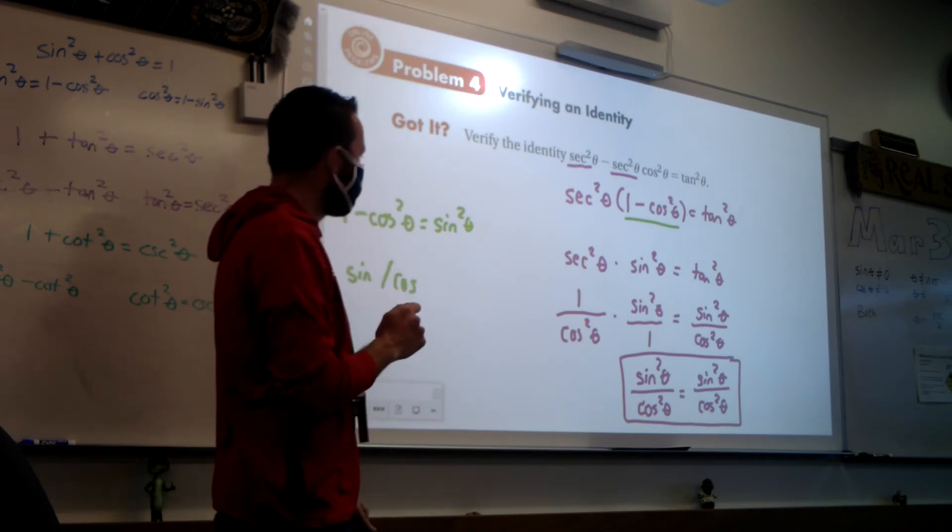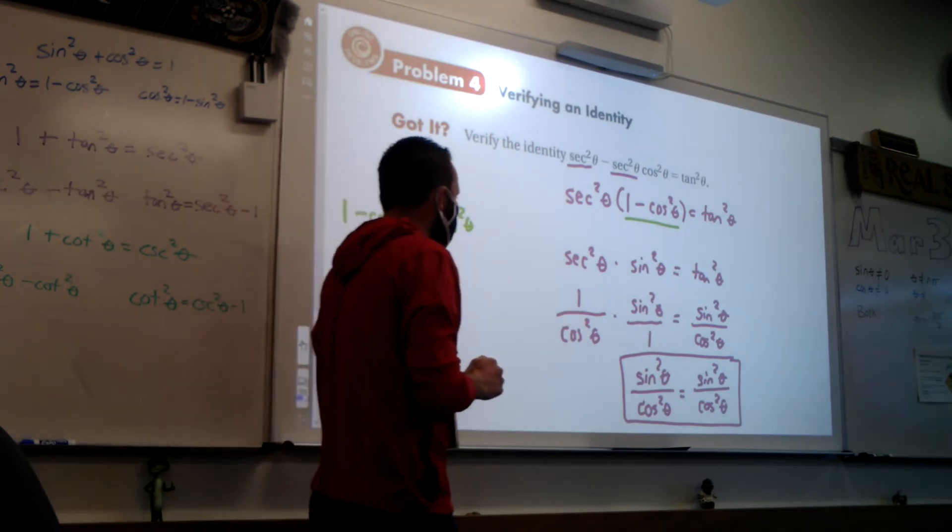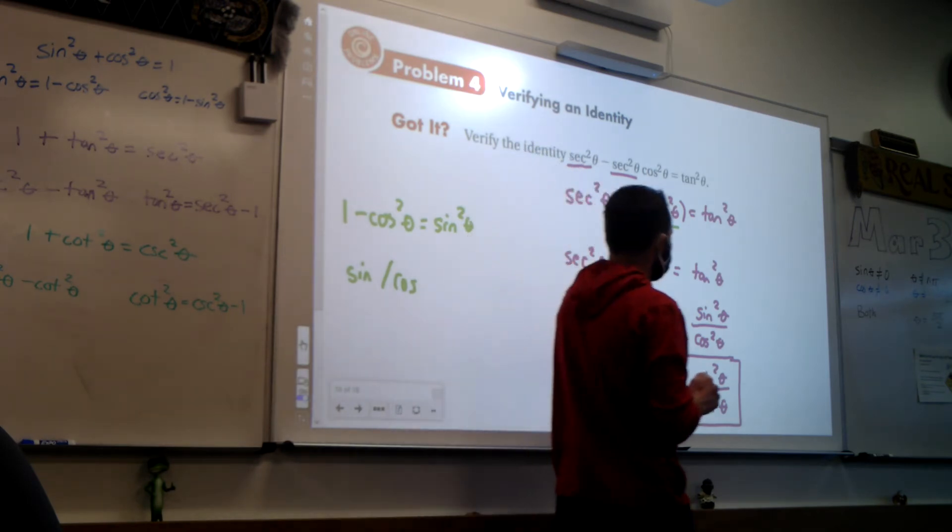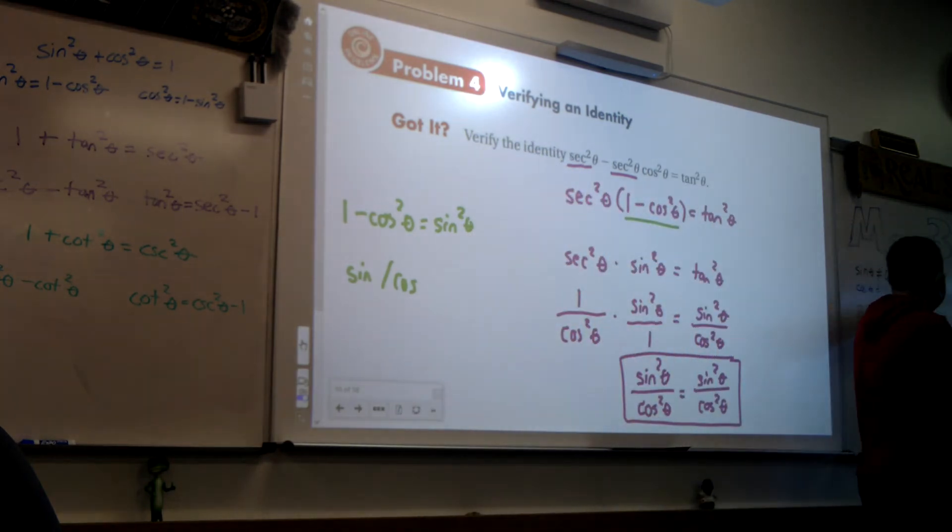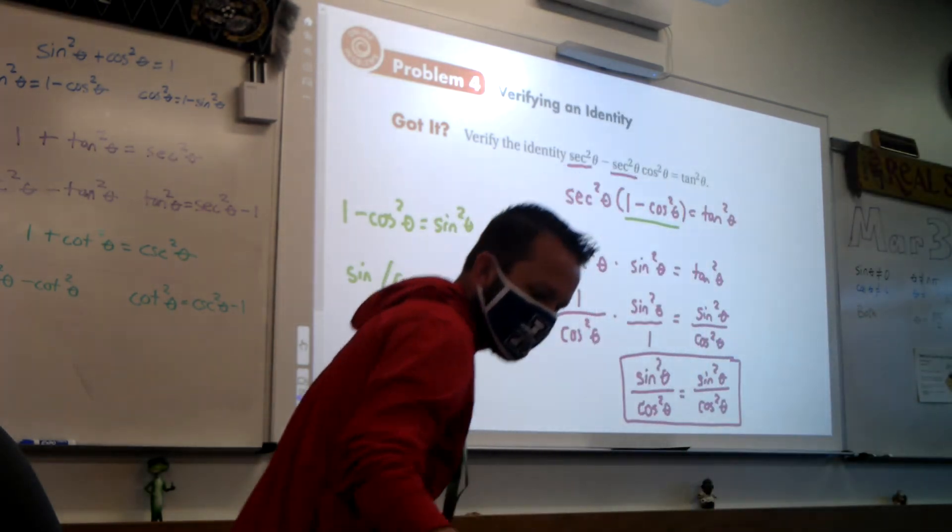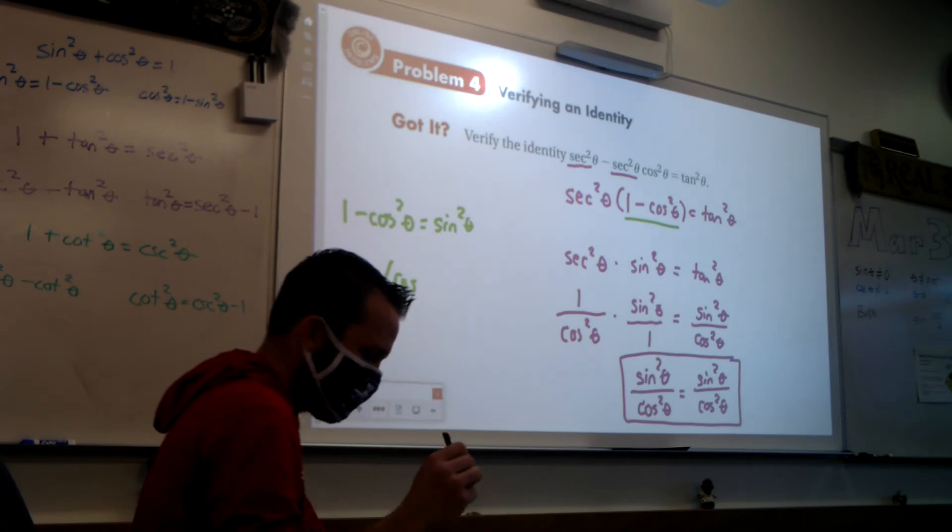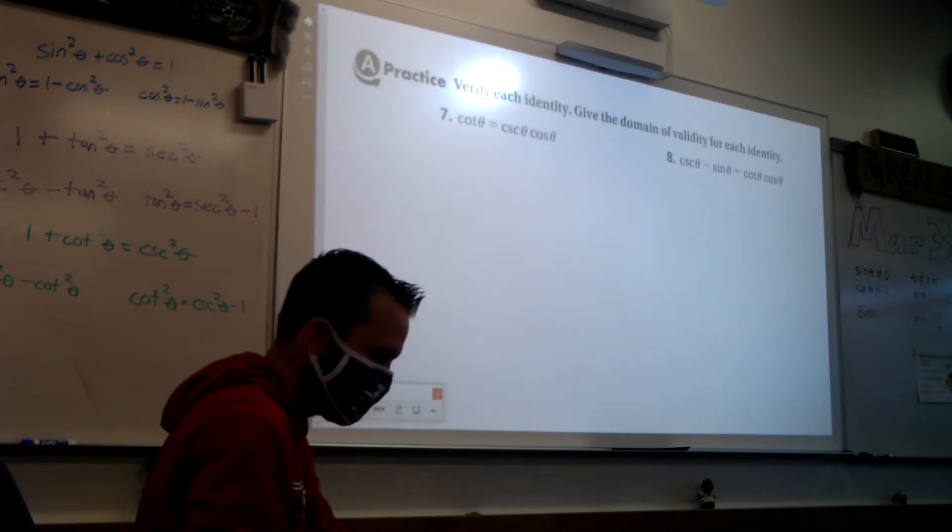This didn't ask for the domain of validity, but if it did, what do you notice is in the denominator? Cosine. So then I would say theta cannot equal odd multiples of pi halves. Done. Domain of validity, it was kind of hard to get the hang of it at the beginning, but hopefully at this point, you're like, okay, that's easy stuff.